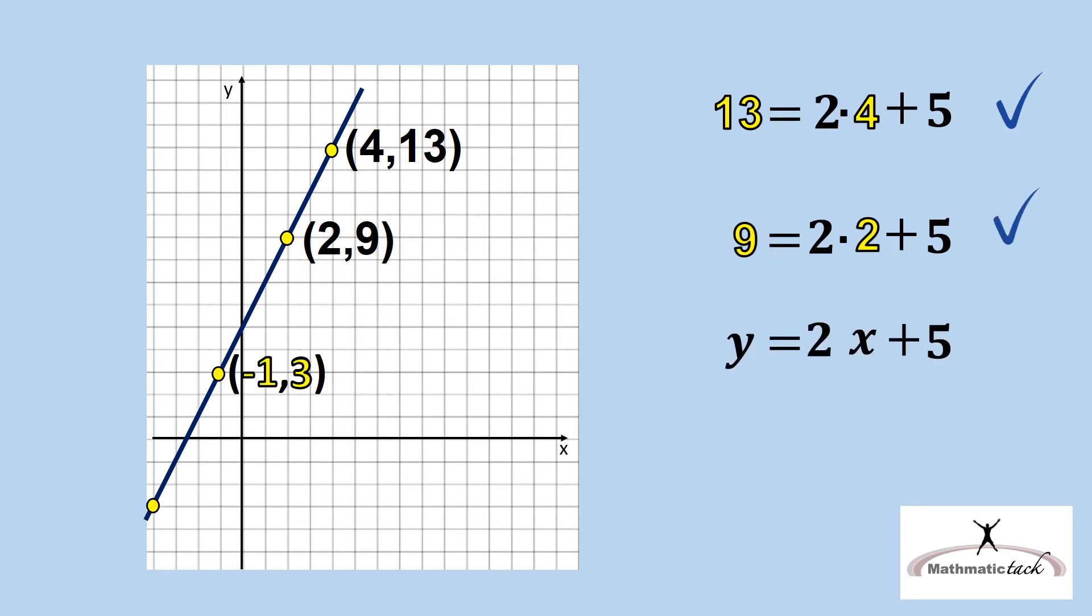The same applies to the point (-1, 3). Here, 3 equals 2 times negative 1 plus 5. And again, the equation is correct.